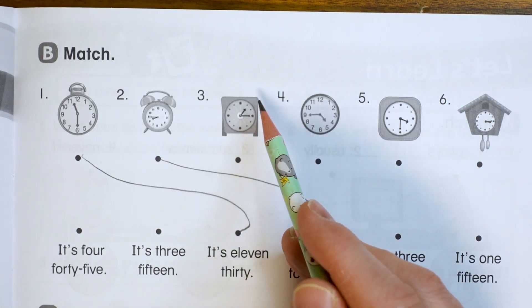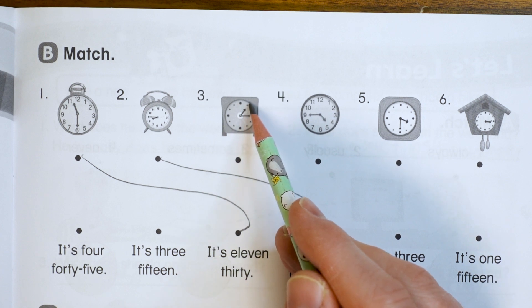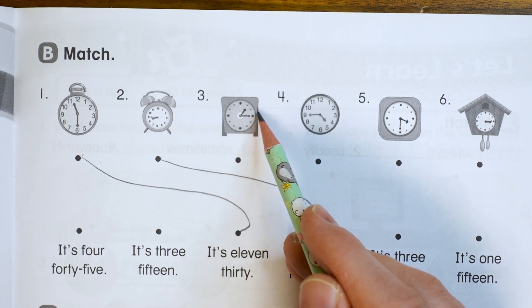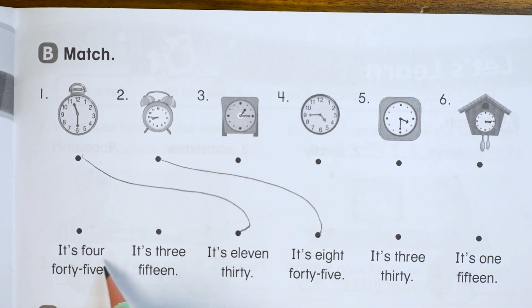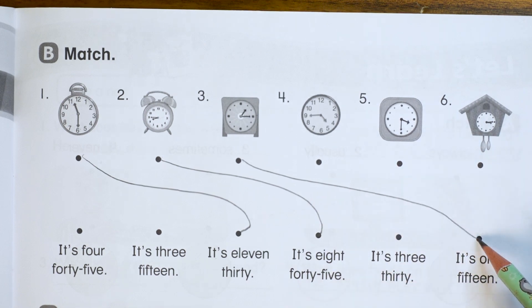Okay. Number three, the hour hand is pointing at one. So it's one and this is five, 10, 15, 1:15. Where's that? 1:15. Here's 1:15.